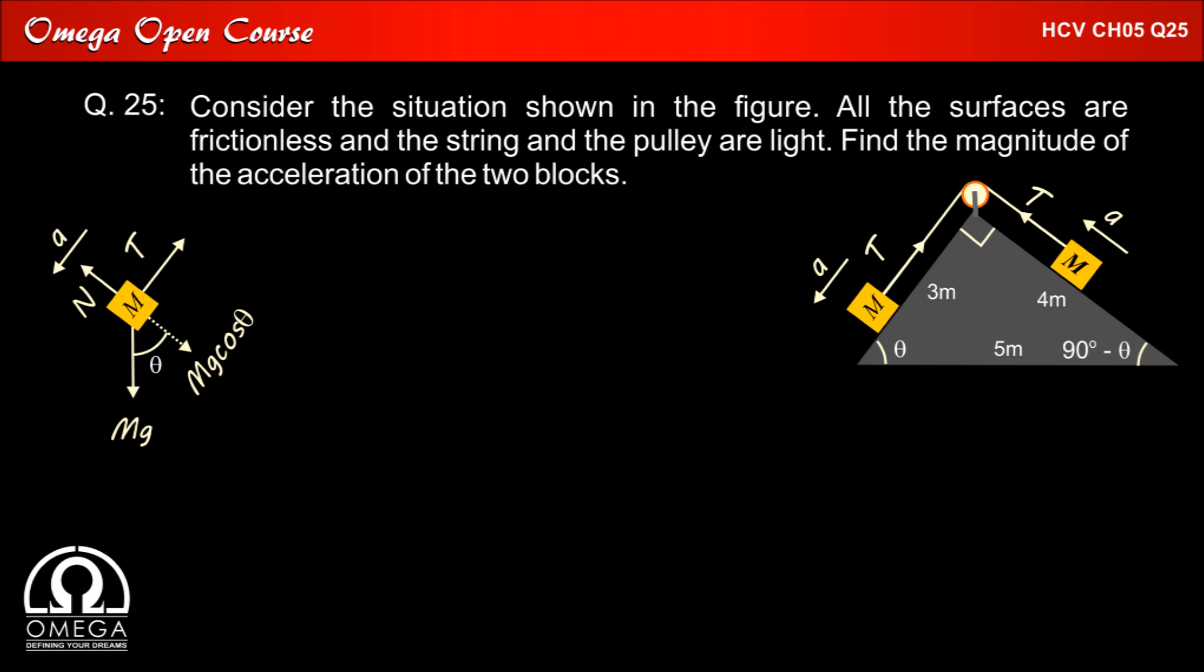So the component of the gravitational force along the line perpendicular to the incline is mg cos theta. Also, the component of gravity along the incline is mg sin theta. Writing the equation of motion along the incline, we get mg sin theta minus T is equal to ma.